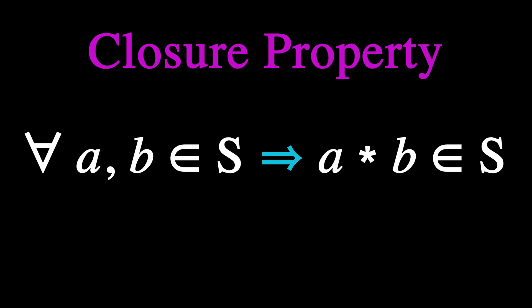The result must belong to the same set. Now, what do we mean by the asterisk in the definition of the binary operation? You can consider the asterisk a placeholder for one of the more familiar binary operations such as addition, subtraction, multiplication, etc.